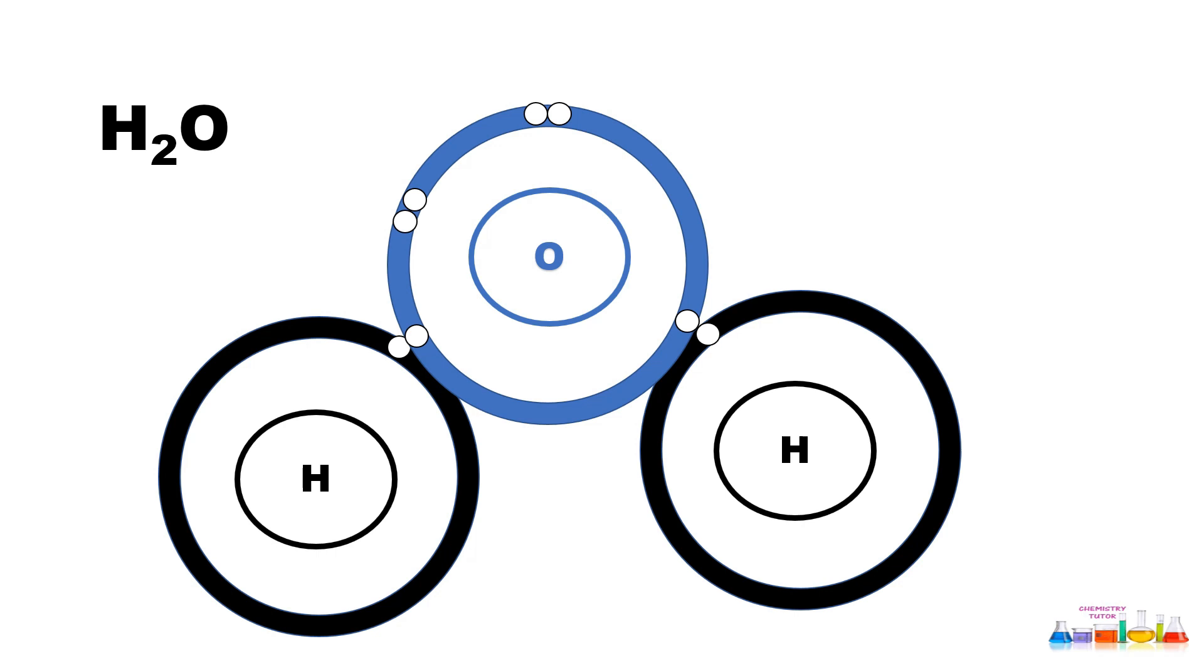of oxygen in the outer shell, it now has eight electrons, and each hydrogen has two electrons. The octet is completed for oxygen, and the duplet is completed for each hydrogen. They will attain stability like noble gases and exist in the form of H₂O.